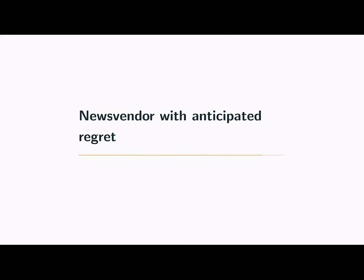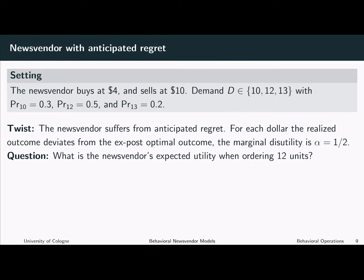Next, we will consider a newsvendor that suffers from anticipated regret. The setting is as before, but now we assume that the newsvendor suffers from anticipated regret. For each dollar the realized outcome deviates from the ex-post optimal outcome, the marginal disutility is alpha equals one half. We want to derive the newsvendor's expected utility when ordering 12 units.